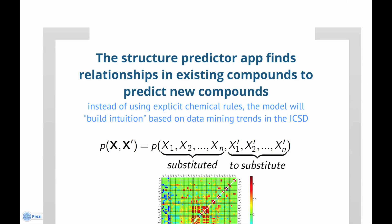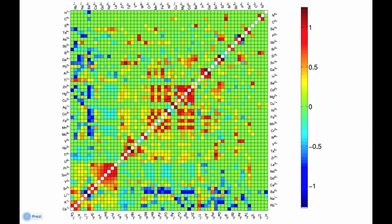The substitution rules can be represented by a matrix that shows how likely two ions are to substitute for one another. Often, the rules make sense. For example, in the matrix, one thing that we see is that the rare earth compounds, which are over here, are very likely to substitute for one another, as are the transition elements. These are known from chemical rules.